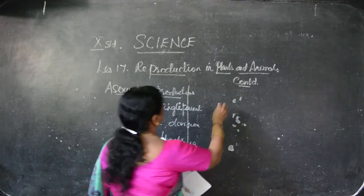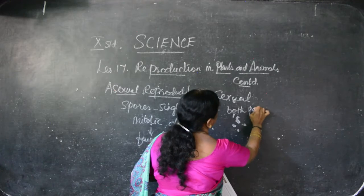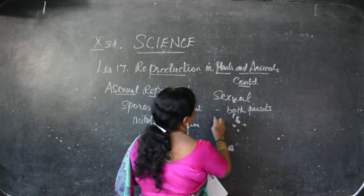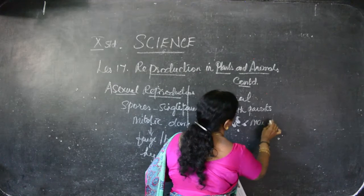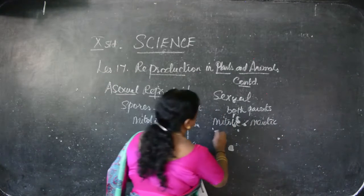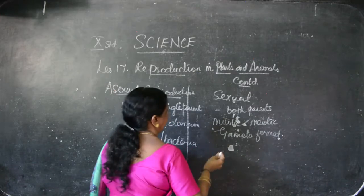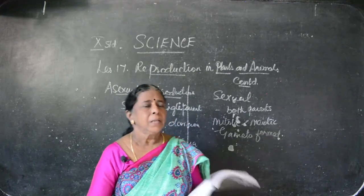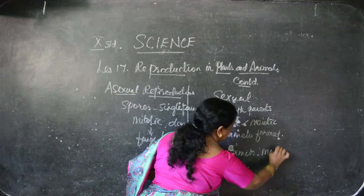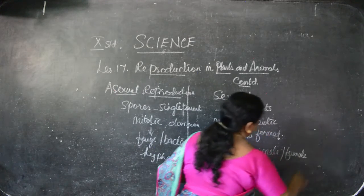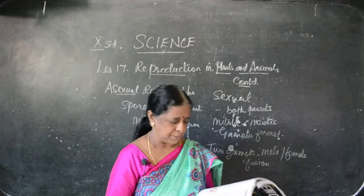Next we have to go for sexual reproduction. Here, I said single parent for asexual — here both parents must be involved. We have to see both divisions: mitotic and meiotic. Both divisions are involved and gametes are formed. Gametes undergo fusion. In sexual reproduction there are two gametes — one is male, the other is female gametes. Fusion between male and female gametes is known as sexual reproduction.